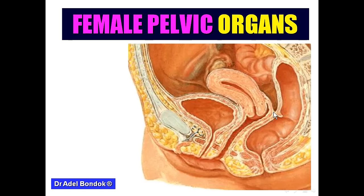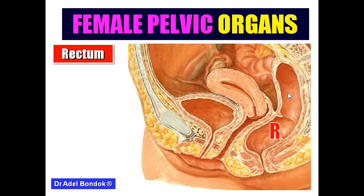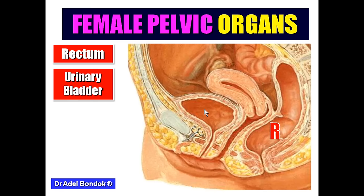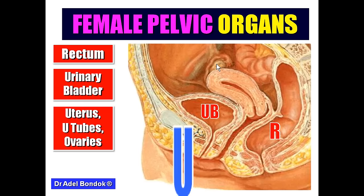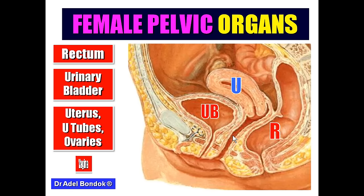The female pelvic organs are: the rectum (most posterior), the urinary bladder (most anterior), and in between the uterus, ovary, and uterine tube. The vagina is located in the middle. The rectum and urinary bladder are present in both males and females.